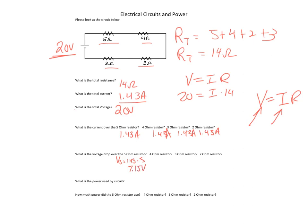The 4-ohm resistor: 4 times 1.43 equals 5.72 volts. The 3-ohm resistor: 3 times 1.43 equals 4.29 volts. The 2-ohm resistor: 2 times 1.43 equals 2.86 volts. Now these all have to add up to a total of 20 volts. So 7.15 plus 5.72 plus 4.29 plus 2.86 gives me 20 — the total voltage adds up to 20.